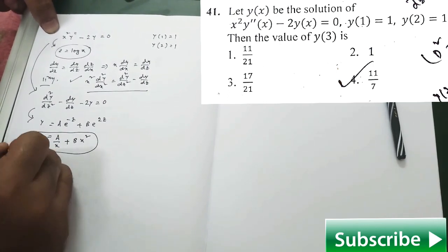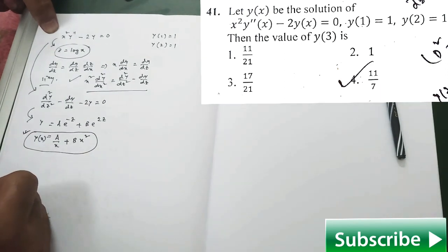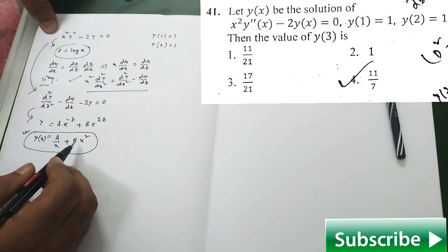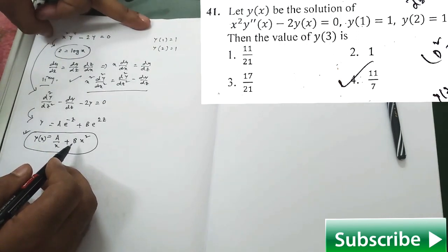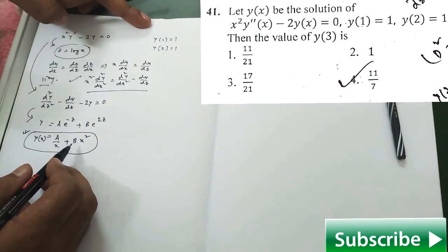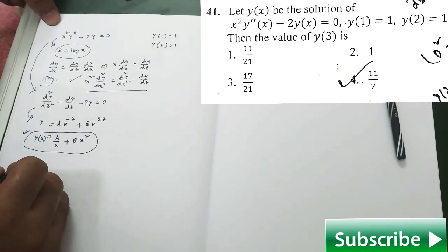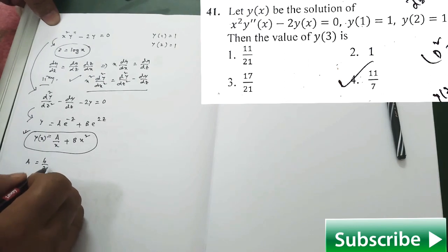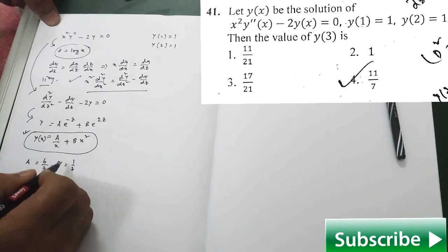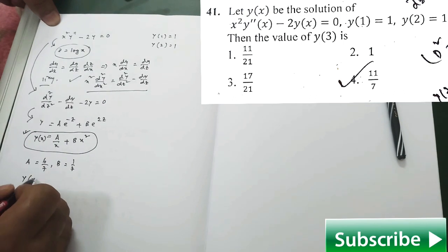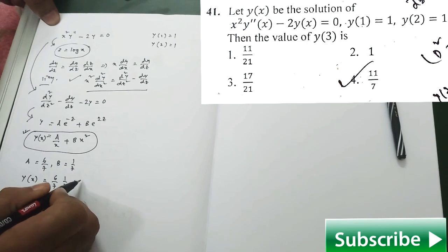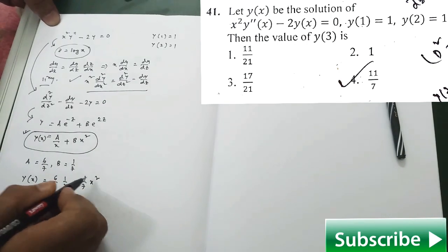Your next job is to find the constants A and B. For that purpose, use the given conditions. After applying those conditions and performing the calculation, you find that A is equal to 6/7 and B is equal to 1/7. So finally, y(x) is equal to (6/7)·(1/x) + (1/7)·x².